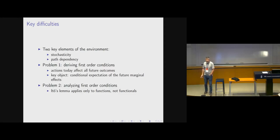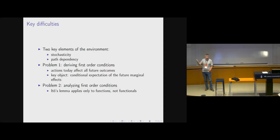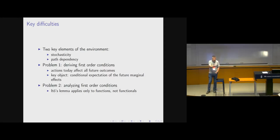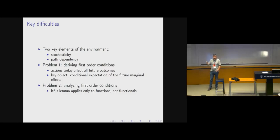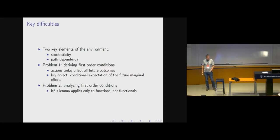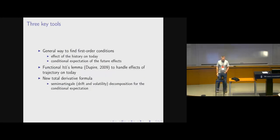The key tool that finance folks are used to for analyzing stochastic environments is Itô's formula. The issue with Itô's formula is that it works only for functions — something that depends on today's state. But it doesn't work for functionals — something that depends on the whole trajectory of past events. What I'm going to show is how to enlarge this analysis to environments where there's path dependency rather than just dependence on today.